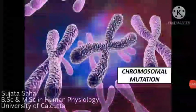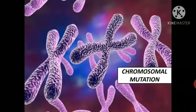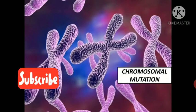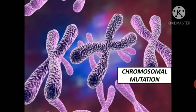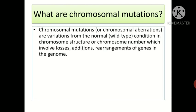Hi guys, welcome back to SS Biology. Today we are going to discuss a very interesting topic: chromosomal mutation. We all know the basic structure of a chromosome — a long arm and a short arm. The short arm is known as pm and the long arm known as qm. Chromosomal mutations, also known as chromosomal aberrations, are variations from the normal wild-type condition in chromosome structure.